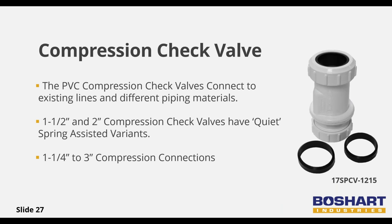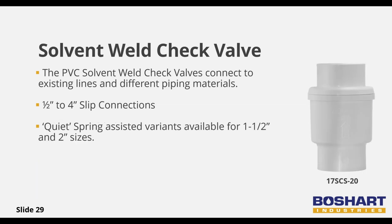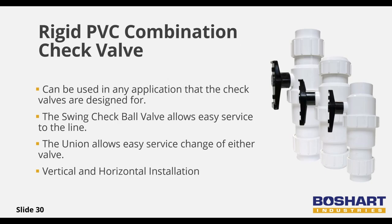These valves are not limited to dirty water — they can also be used in industrial, pool and spa, and pond systems. The PVC compression check valves can connect to ABS, PVC, brass, and steel piping, eliminating precise cutting on existing lines. These are available from 1.25-inch up to 3-inch; the 1.5-inch and 2-inch valves have a spring-assisted variant available. True union valves are also available in 1.5 and 2-inch sizes, both with spring-assisted options. Solvent weld check valves are available in 0.5-inch up to 4-inch, with spring-assisted options for 1.5-inch and 2-inch.